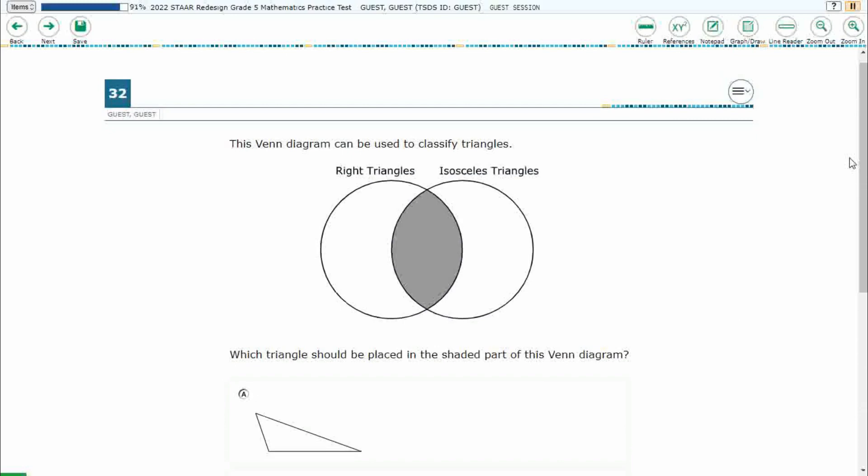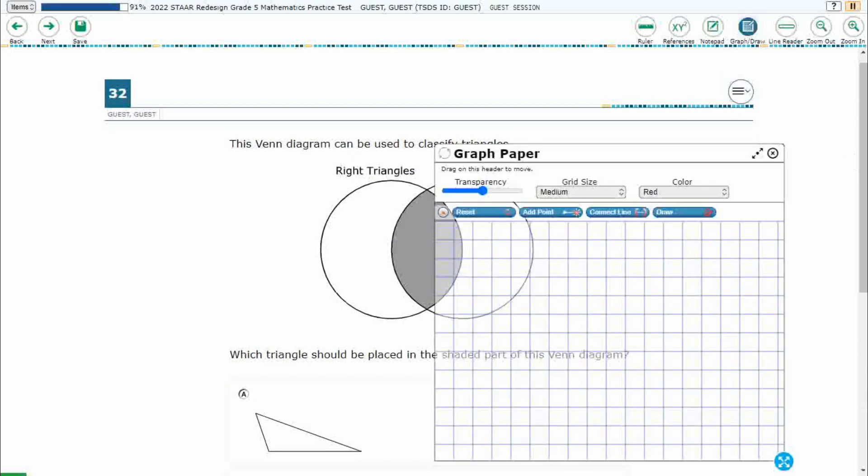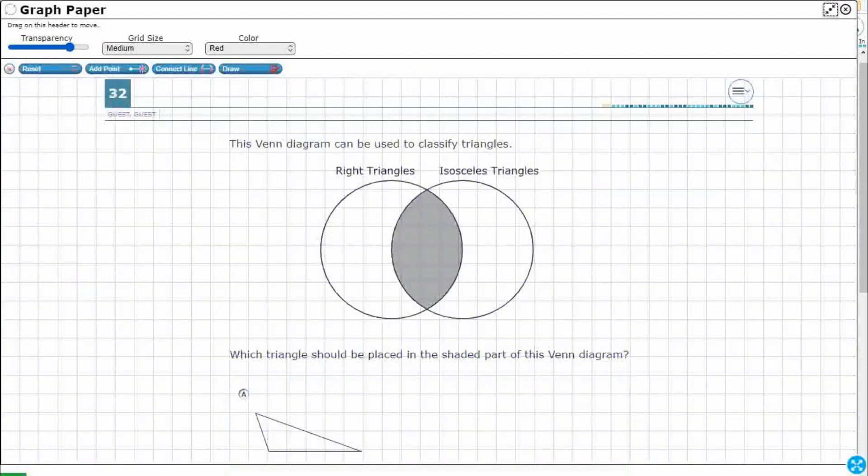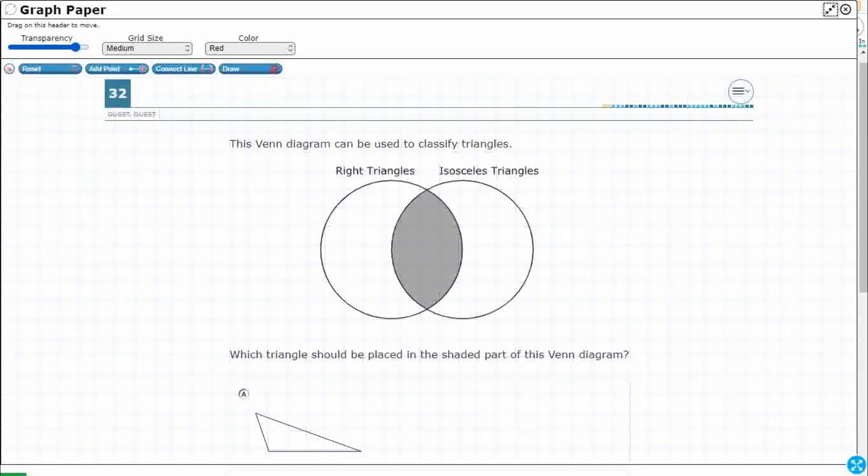Alright, so we've got a Venn diagram. We're trying to classify some two-dimensional shapes here. It looks like we're dealing with triangles. So I've got right triangles and I've got isosceles triangles.